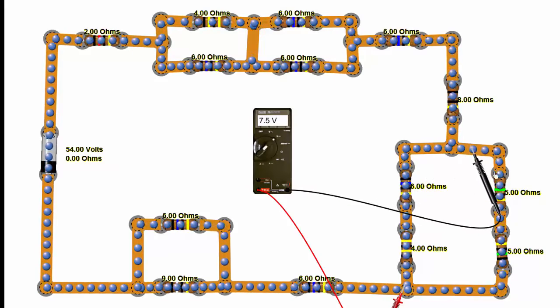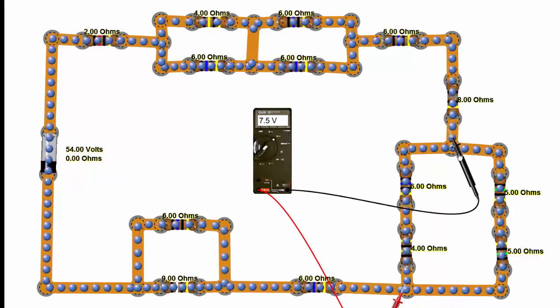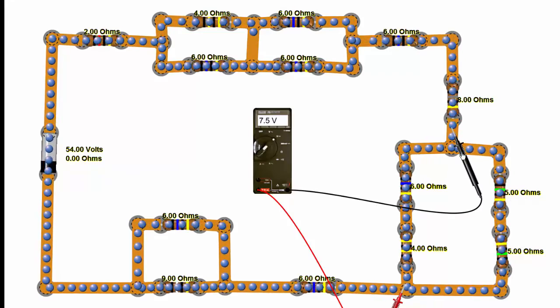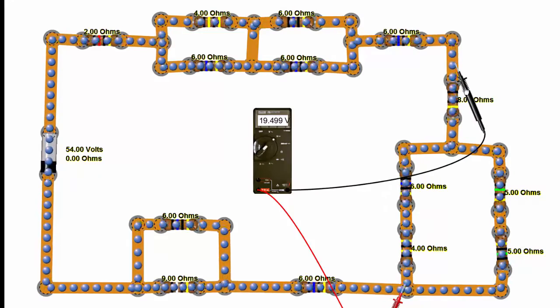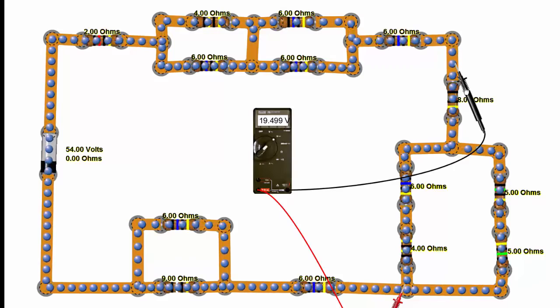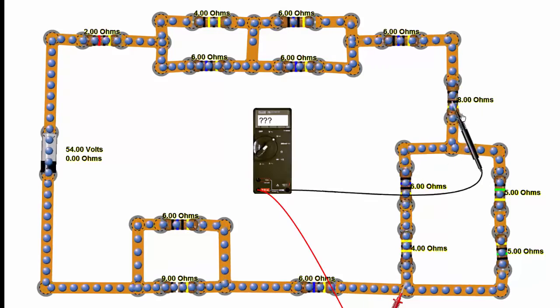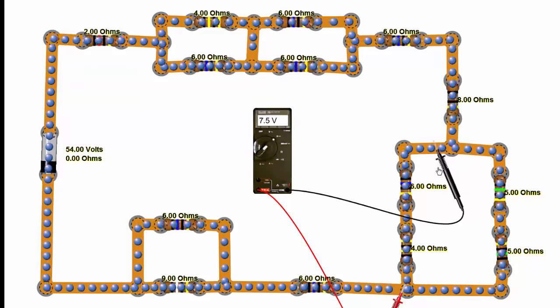Now when we hit a component, it's a different story, because going through that component, there has to be a voltage drop. So up here we measure 19.5, because we're going across a component now, but for the wire itself we shouldn't measure any difference.